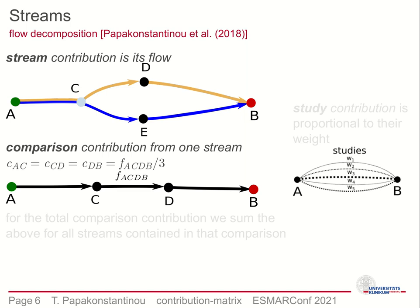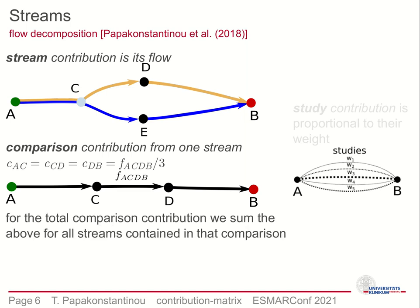If a comparison takes part in multiple streams we have to add the contribution from each stream in order to get its total contribution. We then calculate the contribution of the studies included in a comparison by the use of the pairwise meta-analysis weights.